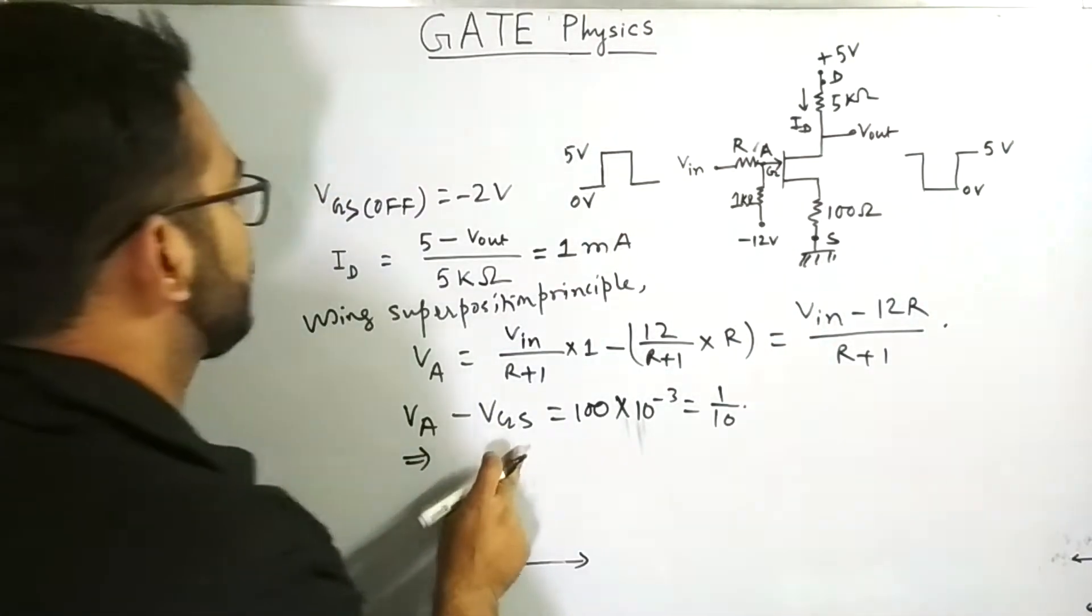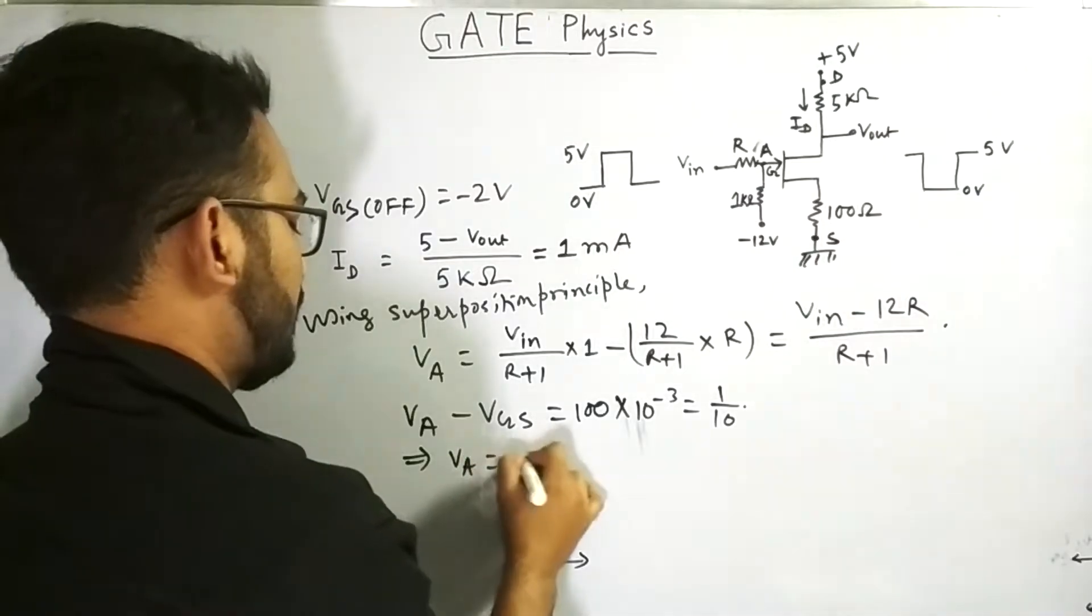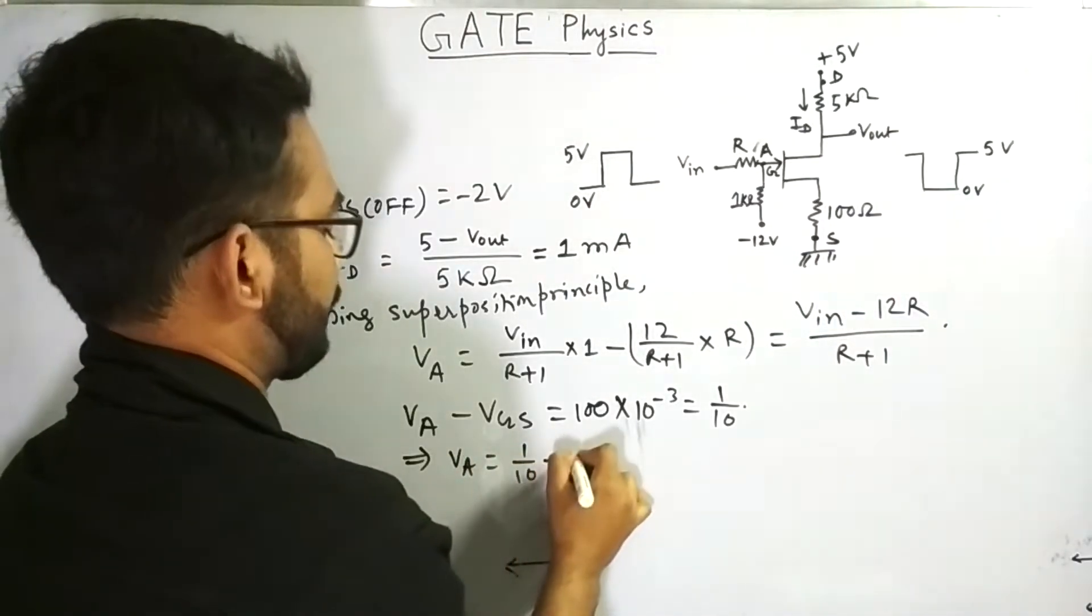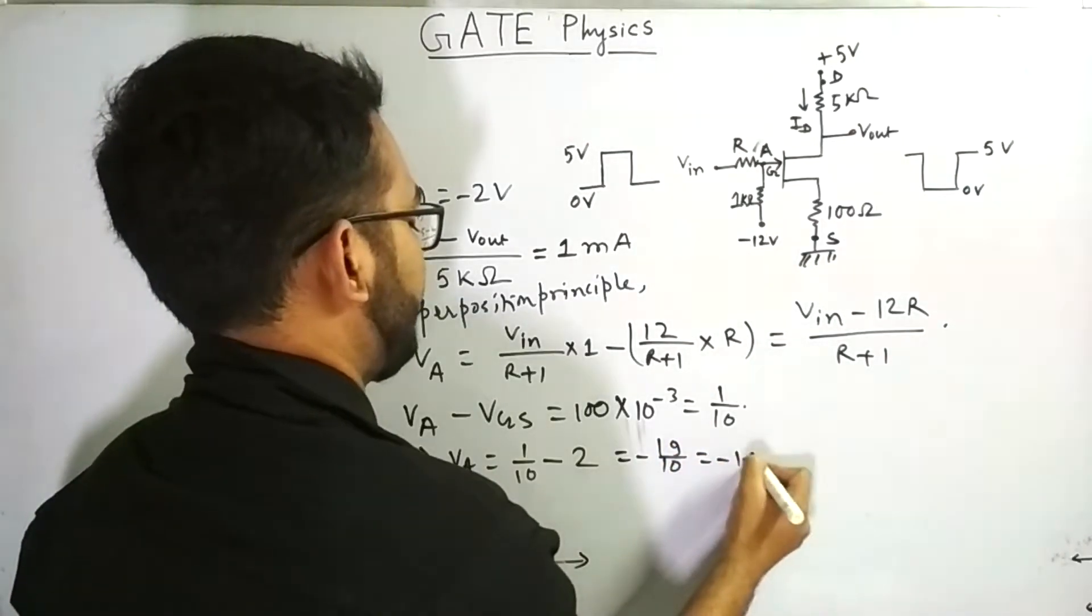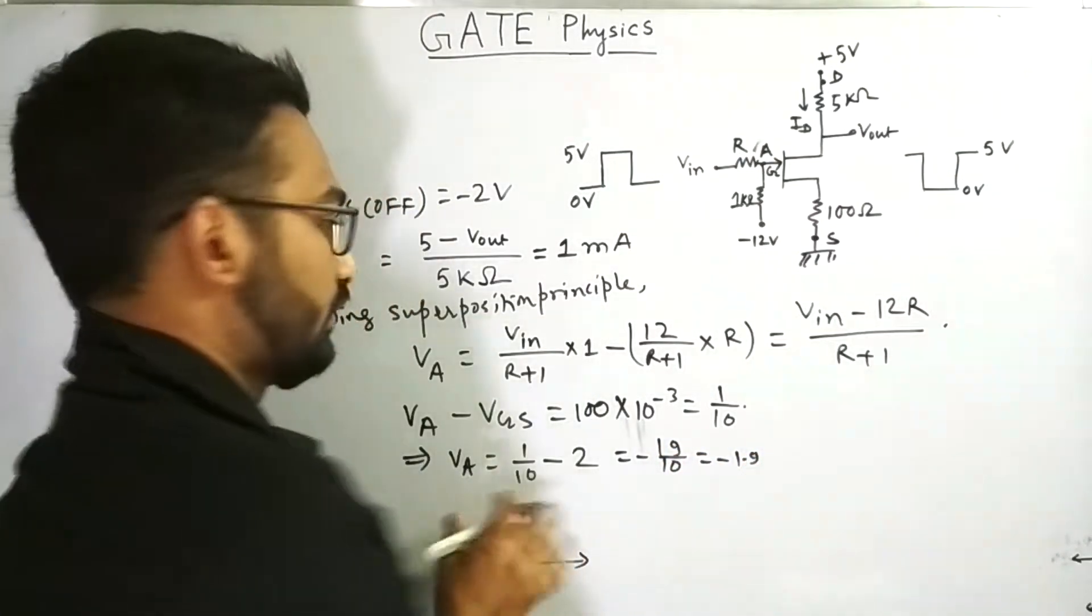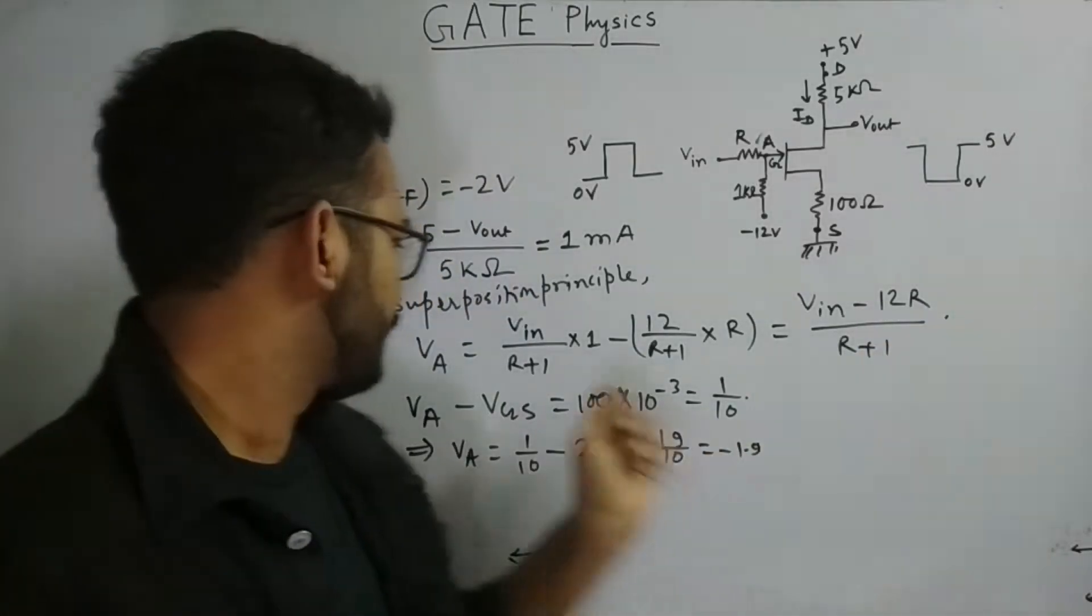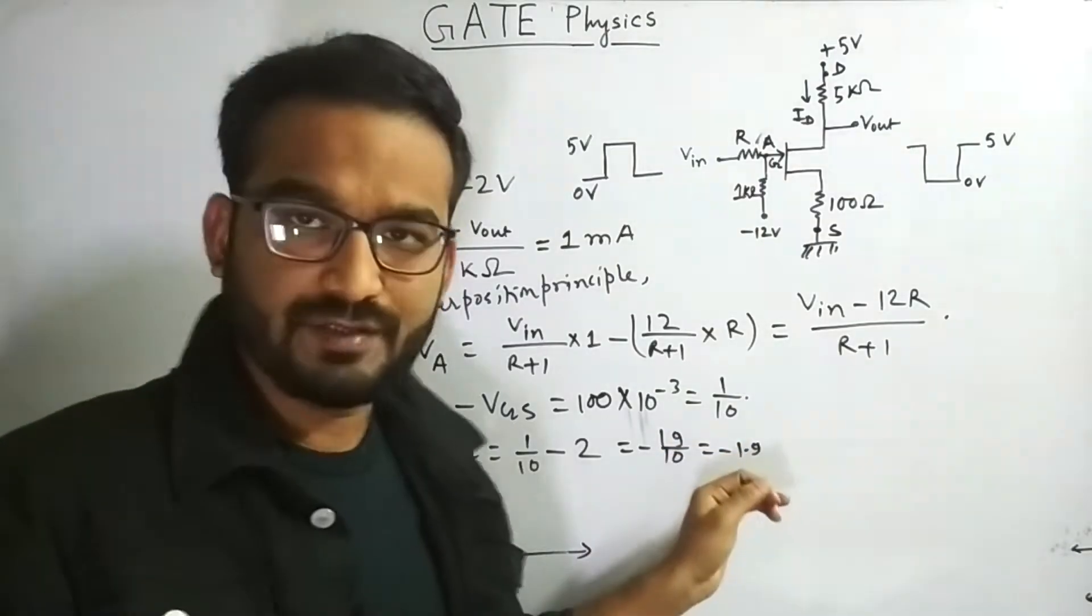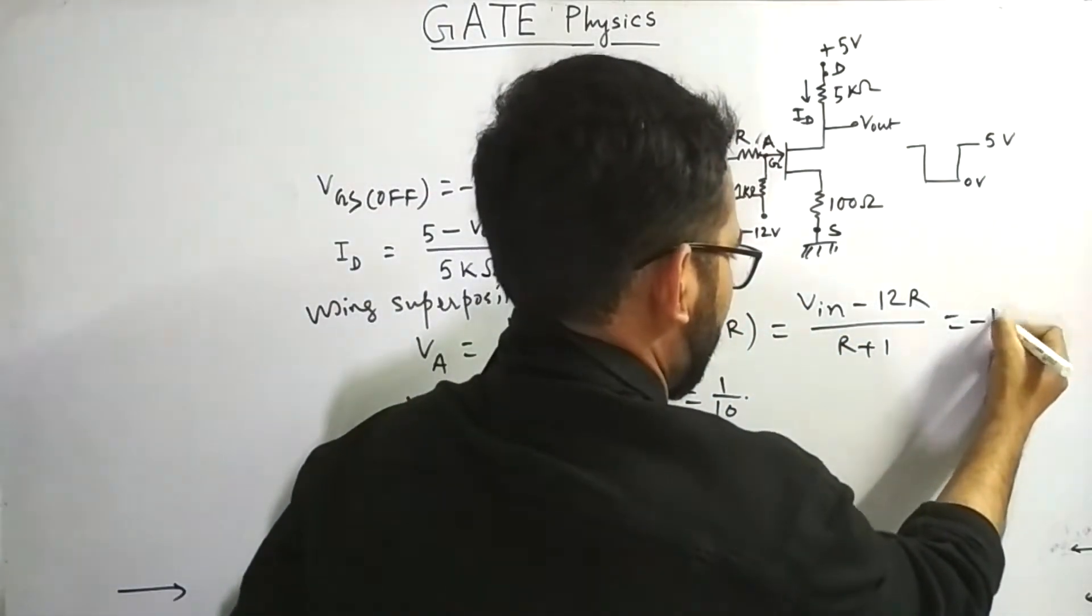Now, VGS is given to minus 2 volts. It has become plus 2 volts. So on the other side, it becomes minus 2 volts. So equal to minus 19 by 10 means minus 1.9 volts. So VA equals to minus 1.9 volts. We will just equate it to this expression. So VA equals to minus 1.9 volts. So we are just putting the value here, minus 1.9.